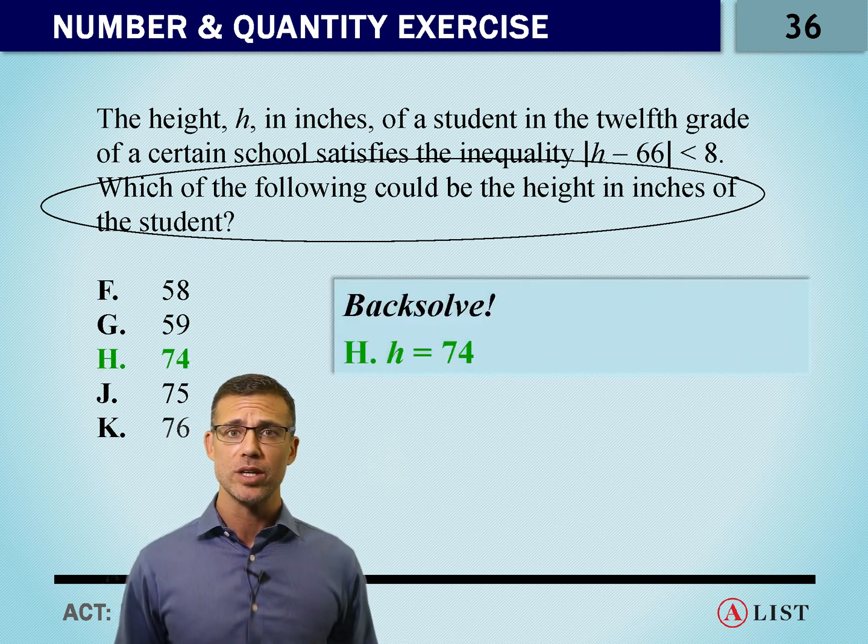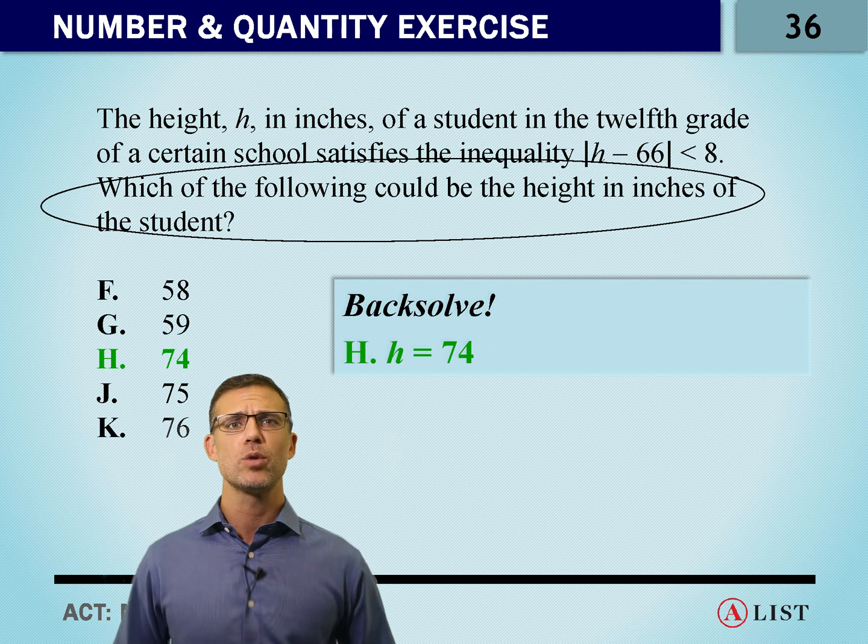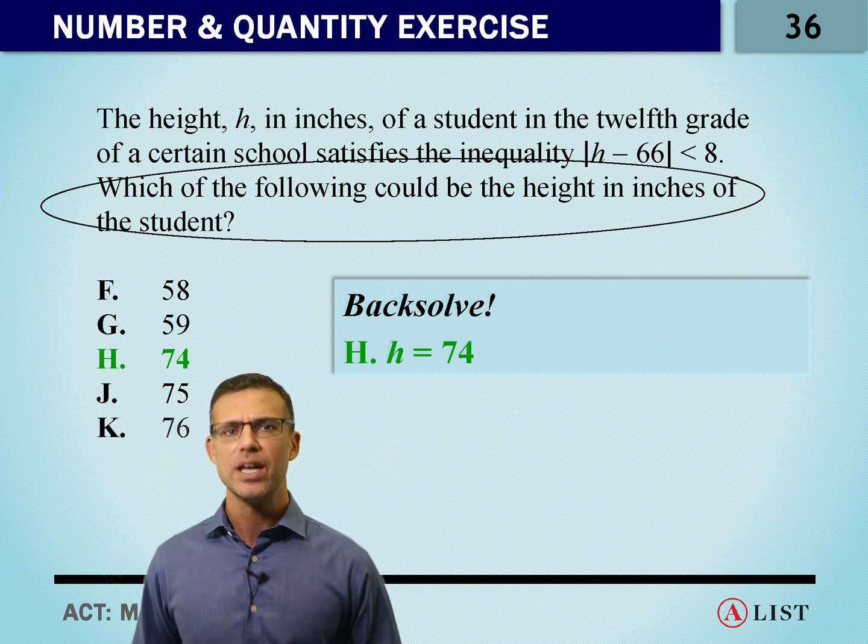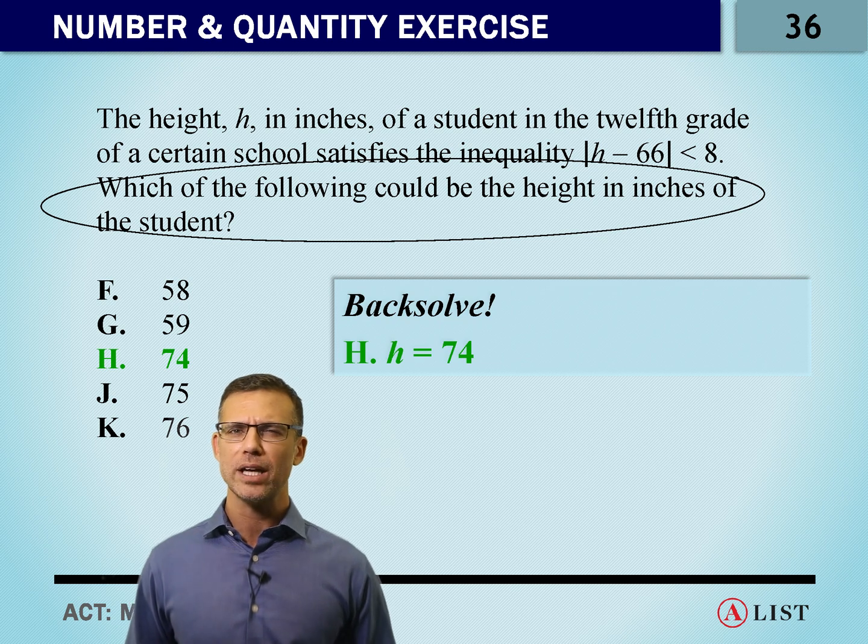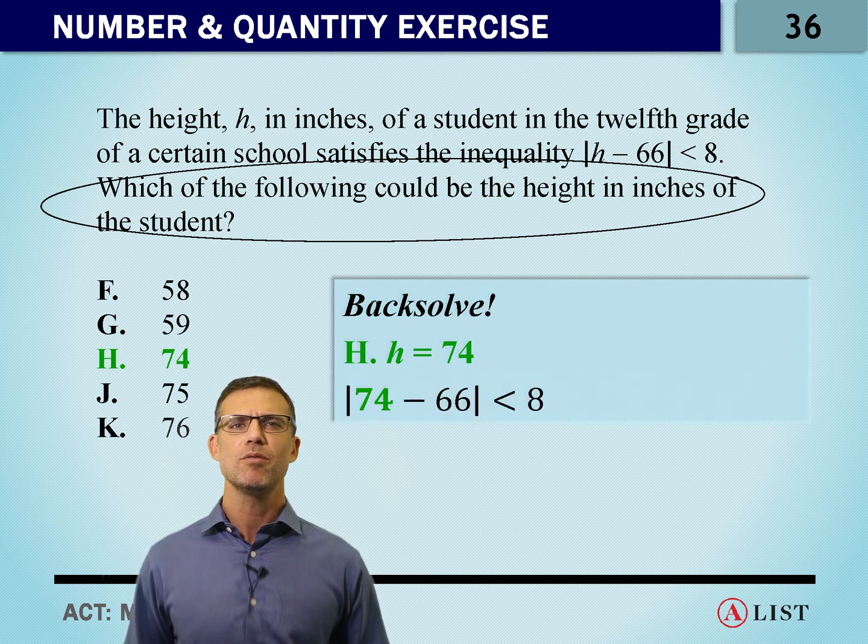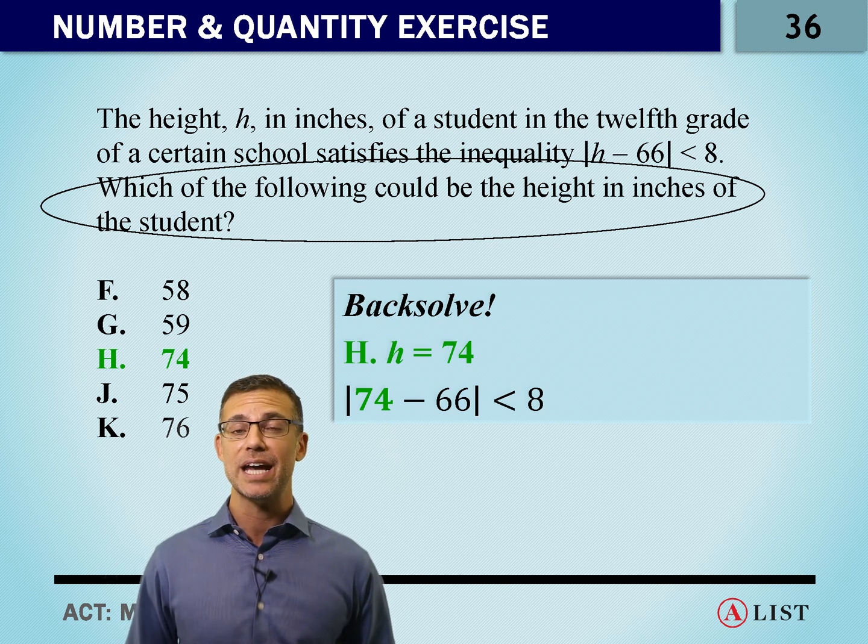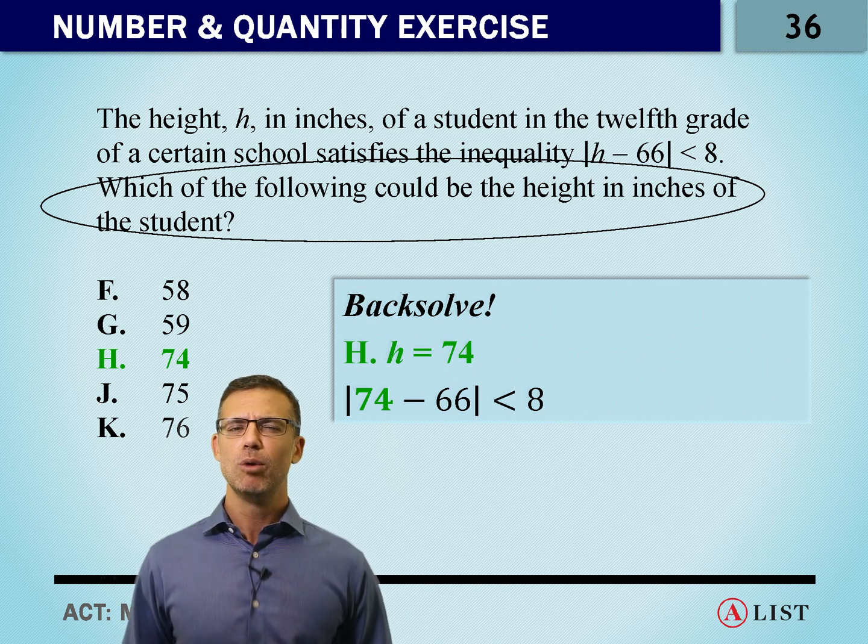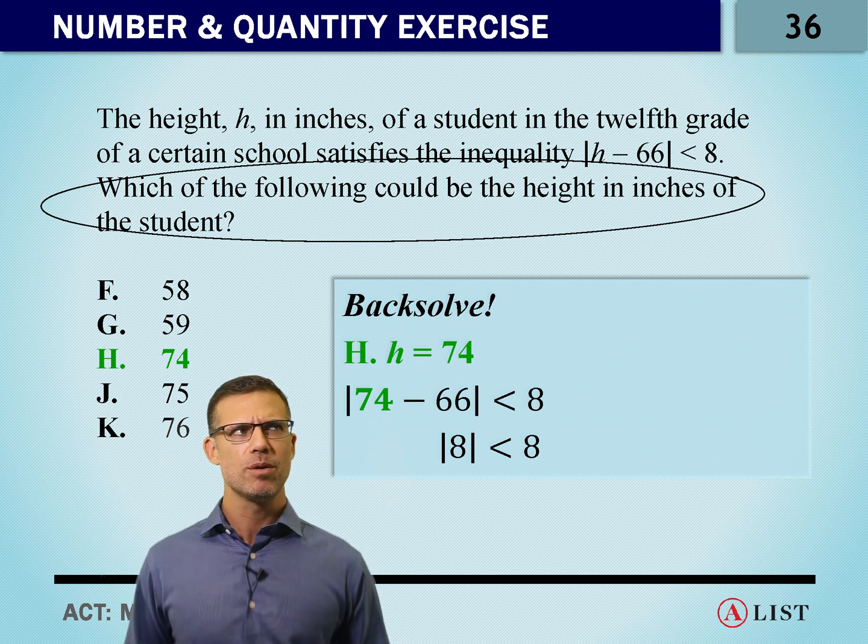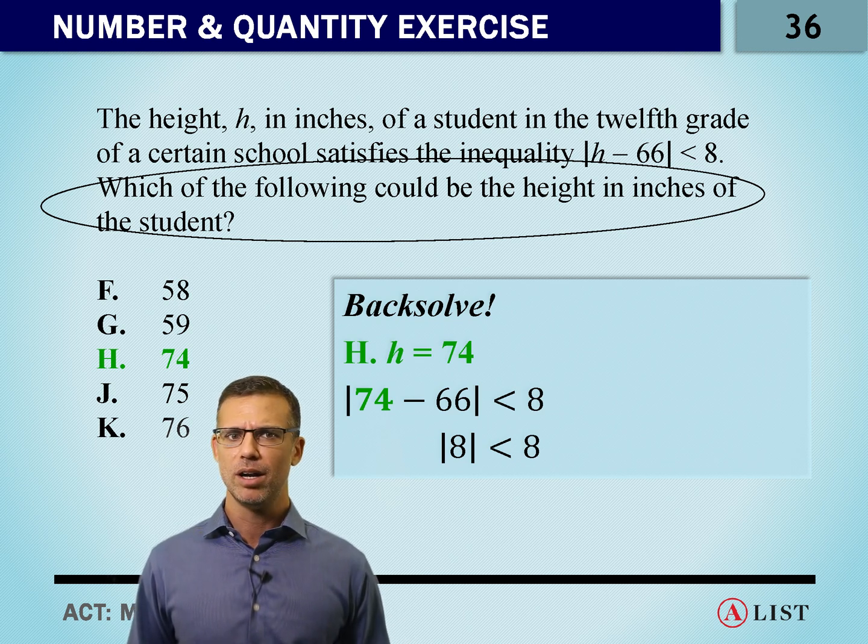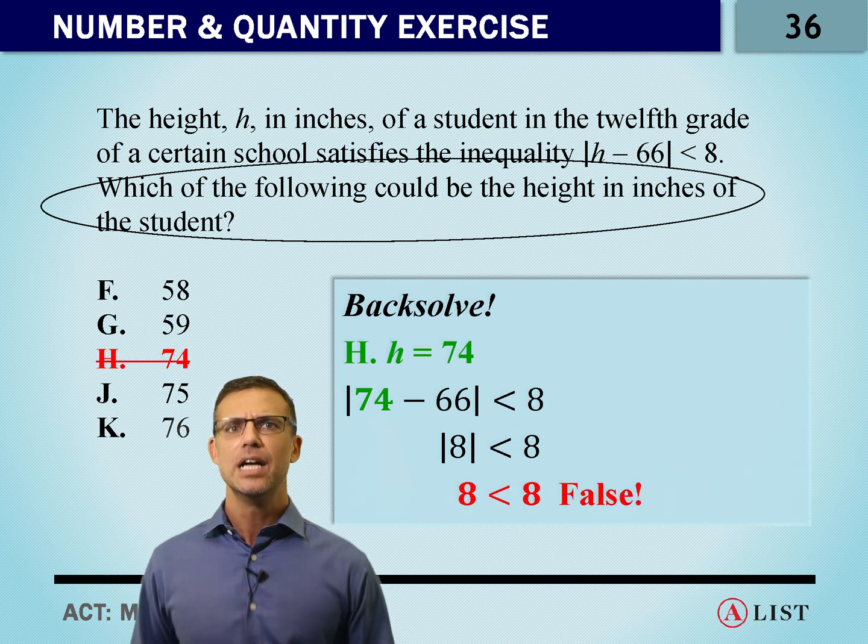We've got five real answer choices to a word problem, and so where do we start? We start with h, 74 inches. If we put 74 inches directly into this equation, we have 74 minus 66. The absolute value of that, is it less than 8? Well, 74 minus 66 is 8. Is the absolute value of 8 less than 8? Well, 8 is not less than 8, so that's false. 74 can't possibly be right.